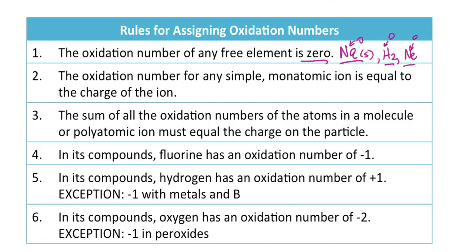If you have a monoatomic ion, then the oxidation number equals the charge of the ion. For example, the calcium cation has a 2+ charge, so the oxidation number for calcium in Ca²⁺ is +2. Similarly, the nitride ion has a -3 charge, so the oxidation number for nitrogen in the nitride ion is -3.